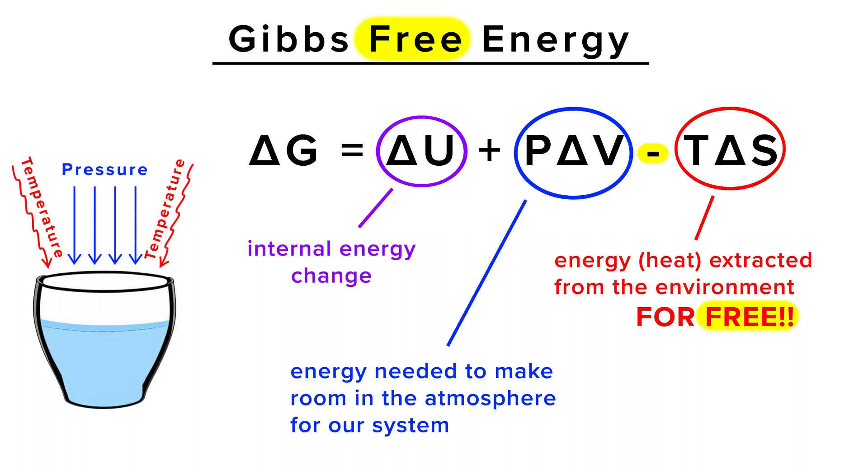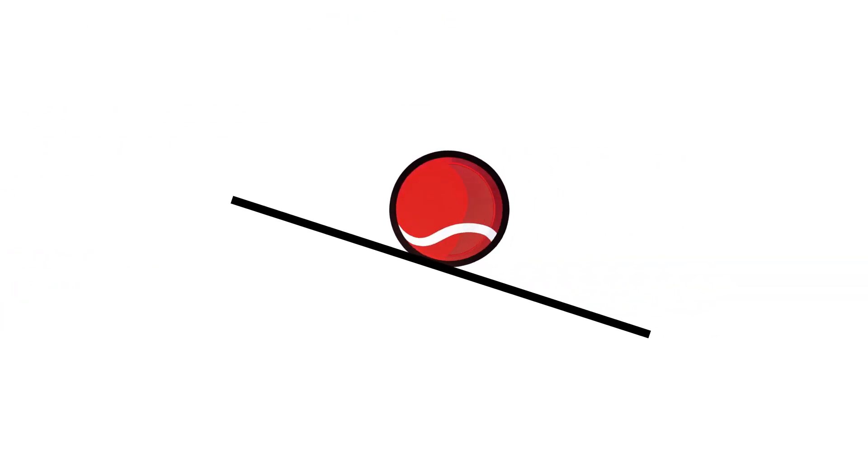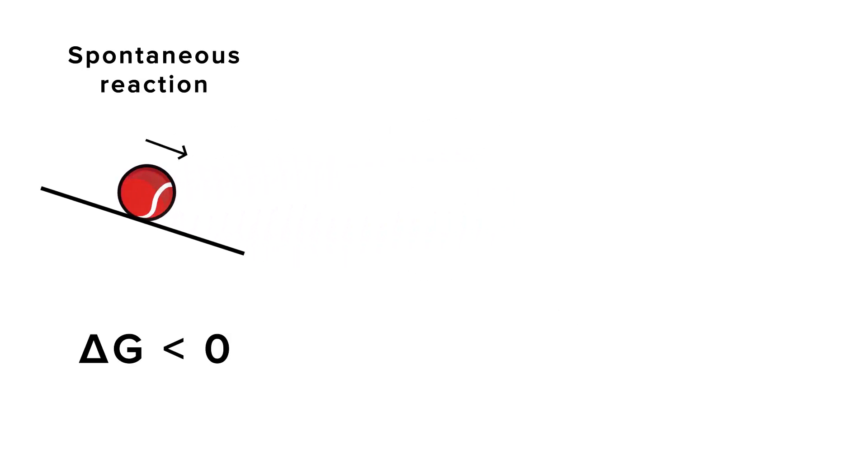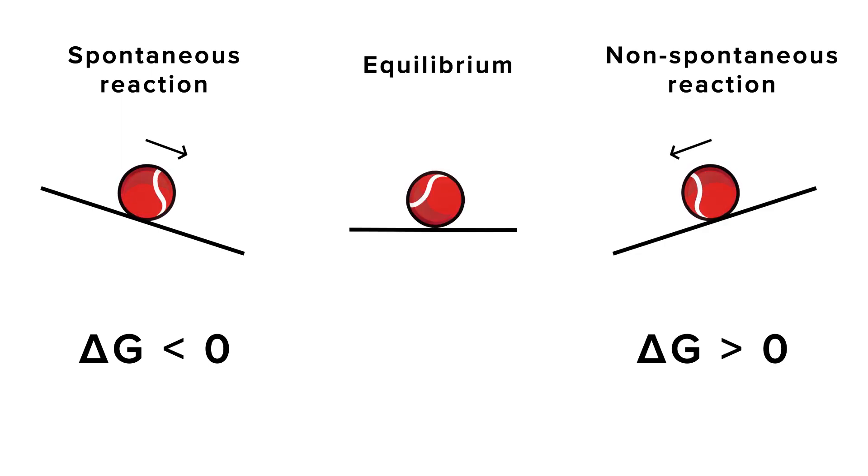Chemical reactions will always try to go in the direction that decreases this free energy, just like a ball tends to roll down a hill. That's why spontaneous reactions have a negative delta G, non-spontaneous reactions have a positive delta G, and when equilibrium is reached, delta G is zero.